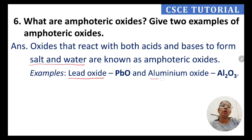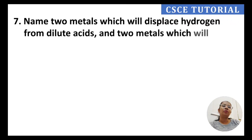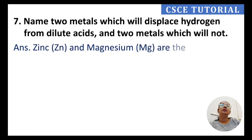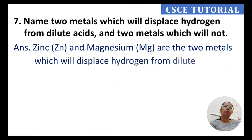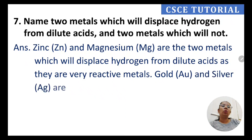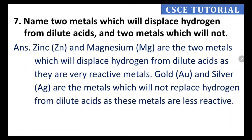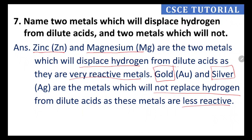Question 7: Name two metals which will displace hydrogen from dilute acid, and two metals which will not. Zinc and magnesium will displace hydrogen from dilute acid because they are very reactive metals. Gold and silver will not displace hydrogen from dilute acids because they are less reactive.